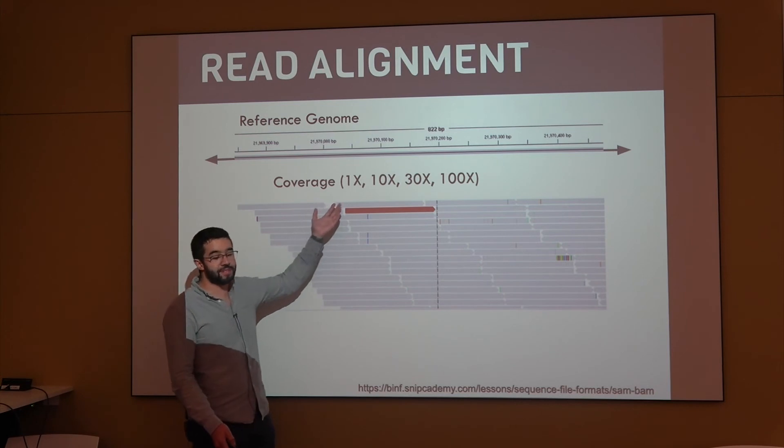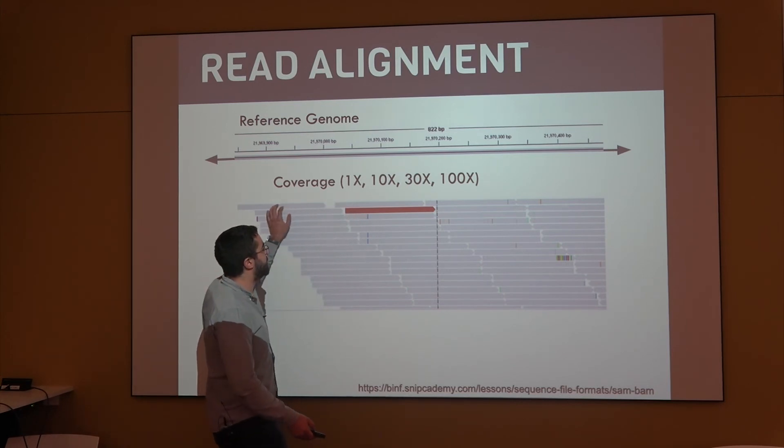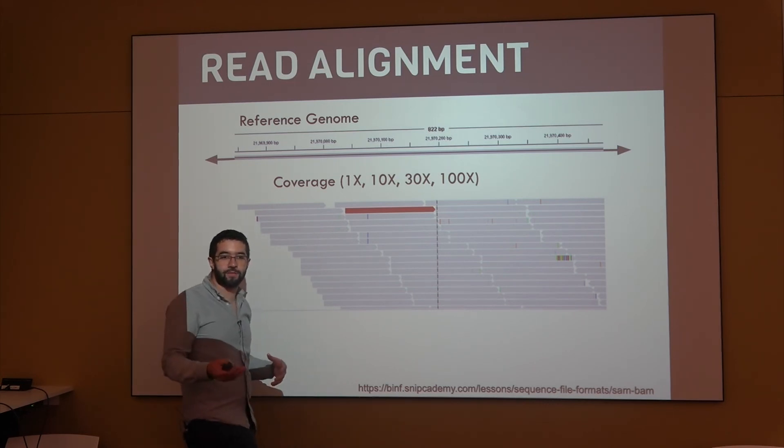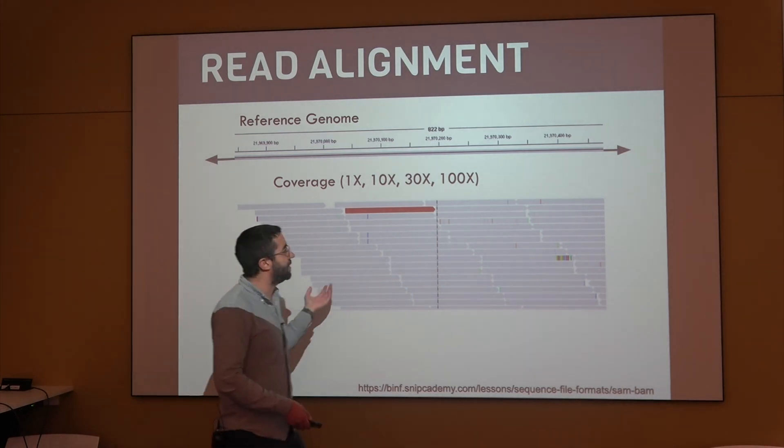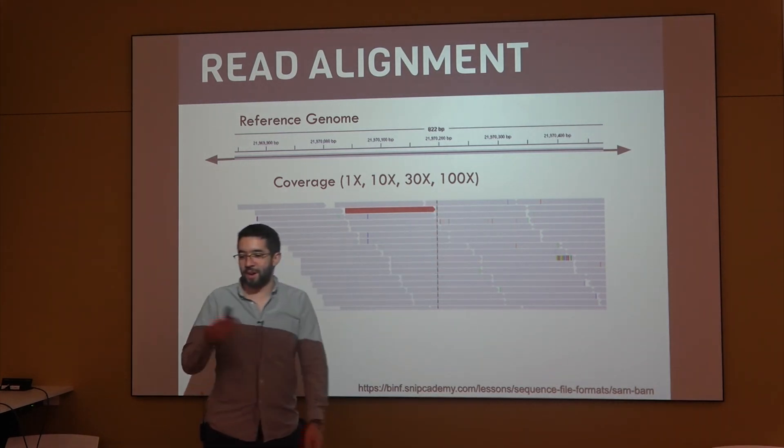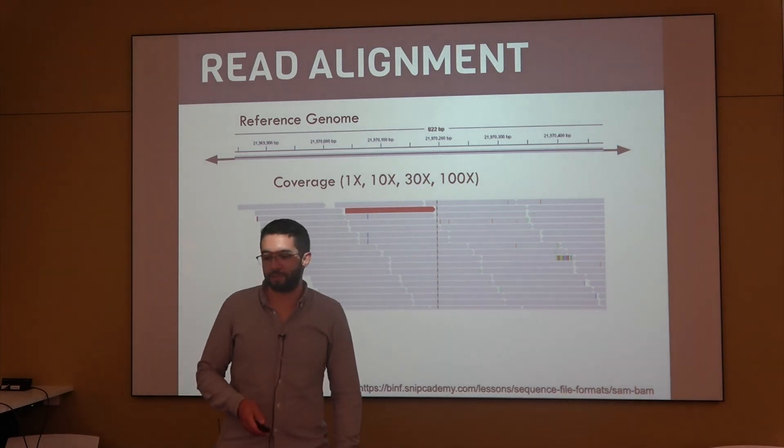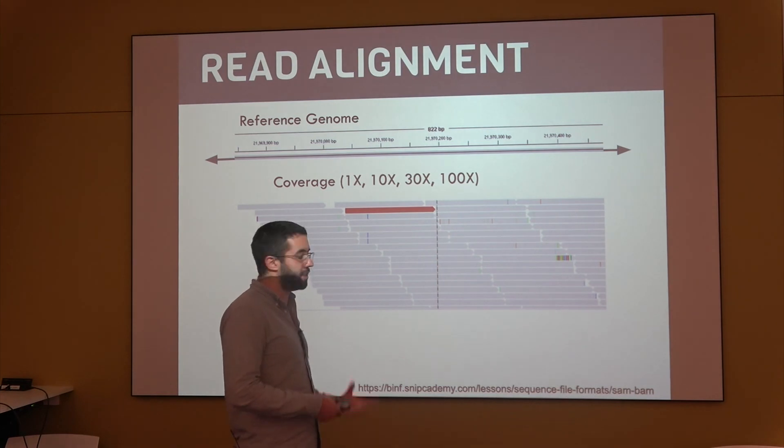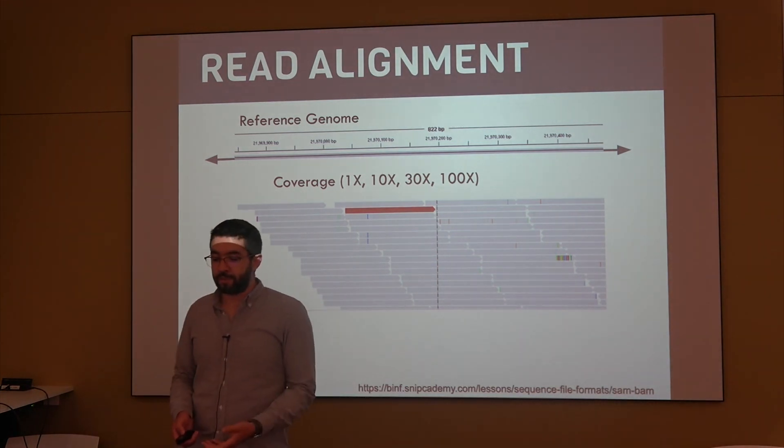So, there's different depths of coverage. 1x is just one line, 10x is on average there's going to be 10 reads on each position of the genome. 30x would be a good number for having every single position of the genome covered. And then there's deep sequencing projects that go up to 100x, 150x for different purposes, one of them is to generate reference genomes.